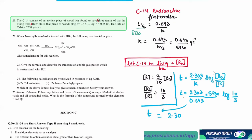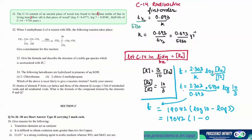So 2.303 divided by 0.693 gives 3.32, and 3.32 into 5730 gives 19,032. Then log of 10 by 3 can be written as log 10 minus log 3, which is 1 minus 0.4771, giving 0.5229.